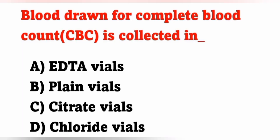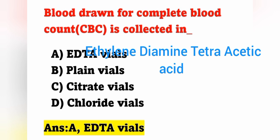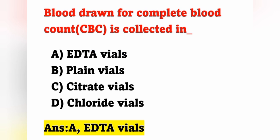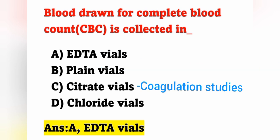Next question: blood drawn for complete blood count (CBC) is collected in which vials? Option A: EDTA vials. Option B: plain vials. Option C: citrate vials. Option D: chloride vials. For CBC, blood is collected in EDTA vials. EDTA stands for ethylenediamine tetraacetic acid. EDTA bottles are used for most blood studies including total leukocyte count, CBC, and individual counts. Plain bottles are used for serological and immunological tests. Citrate vials are used for coagulation studies such as prothrombin time and partial thromboplastin time.